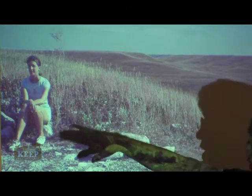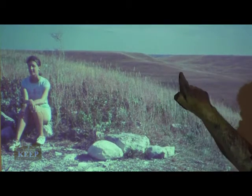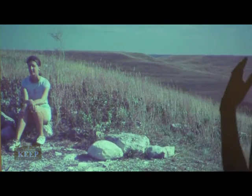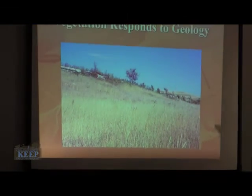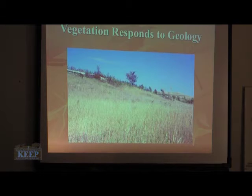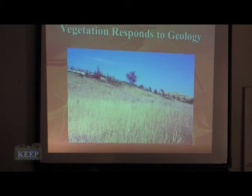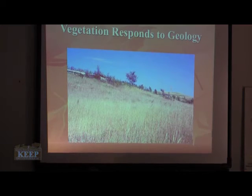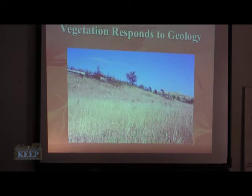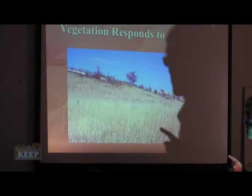So the soils are very shallow on the platforms, but on the slopes they're much thicker, because the mudstones underneath erode more quickly. So what you have is different plants — different essentially ecosystems — associated with the platforms versus the slopes, different vegetation, because the soils are going to be deeper on the slopes than they are on the platforms.